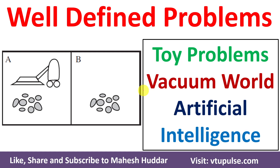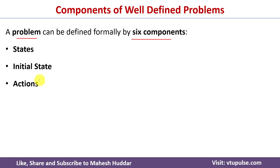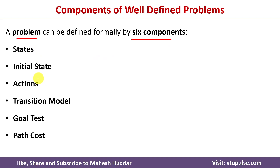Welcome back. In this video I will discuss well-defined problems in artificial intelligence using the vacuum world example. A problem in artificial intelligence is defined using six components: states, initial state, actions, transition model, goal test, and path cost. Each of these components we will discuss using the vacuum world example.